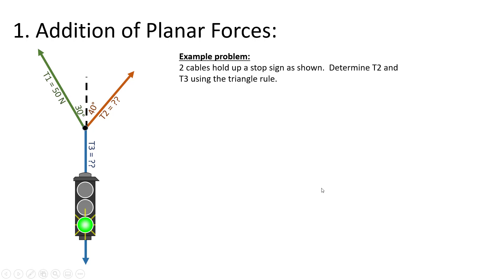Here's an example problem. If you look at what is in the book, this scenario happens over and over again, where you have three vectors all coming together. Maybe you know some information like angles and one of the tensions, and you want to figure out what the rest are. One thing to notice is that these vectors are concurrent — they all come together at a single point. For Chapter 2, we're not worried about rotational motion yet.